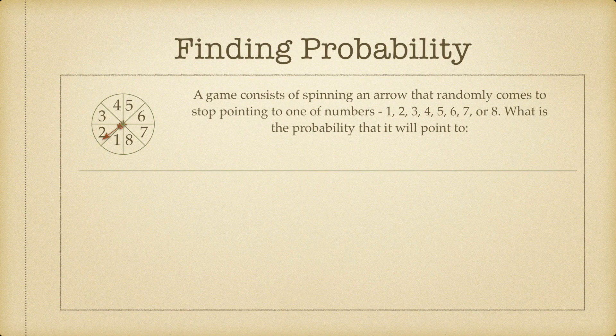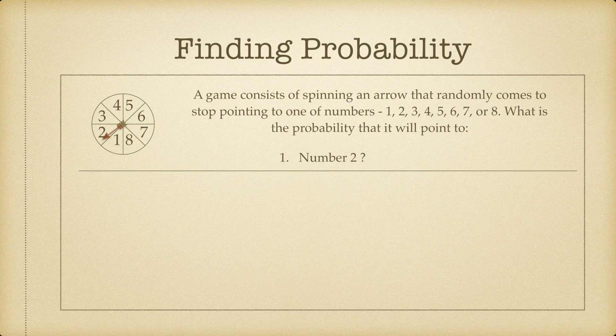A game consists of spinning an arrow that randomly comes to a stop pointing at one of the numbers: 1, 2, 3, 4, 5, 6, 7, or 8. This is a game of chance where we spin the arrow and it can randomly come to stop pointing at any one of the 8 numbers.